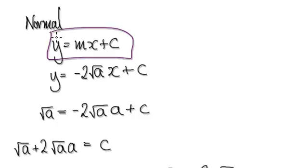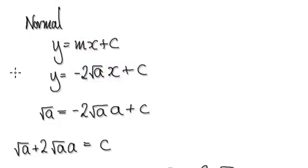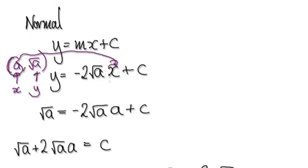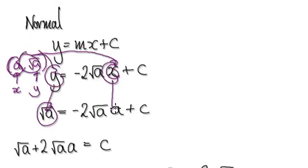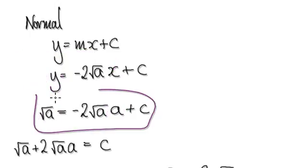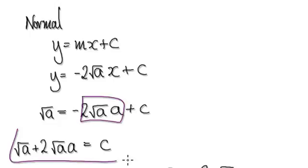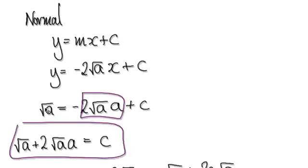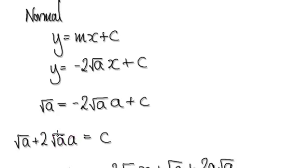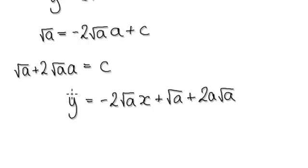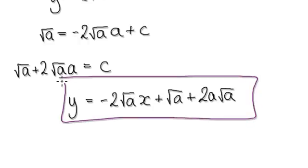Our normal line would be in the form y equals mx plus c. We know the gradient would be minus 2 root a, and we know it passes the point (a, √a). So this is our x and this is our y. We can substitute these in, which gives us an expression, and then it's just a matter of finding c. Adding the appropriate term to both sides gives us c, and so the equation of our normal line would be given by this.